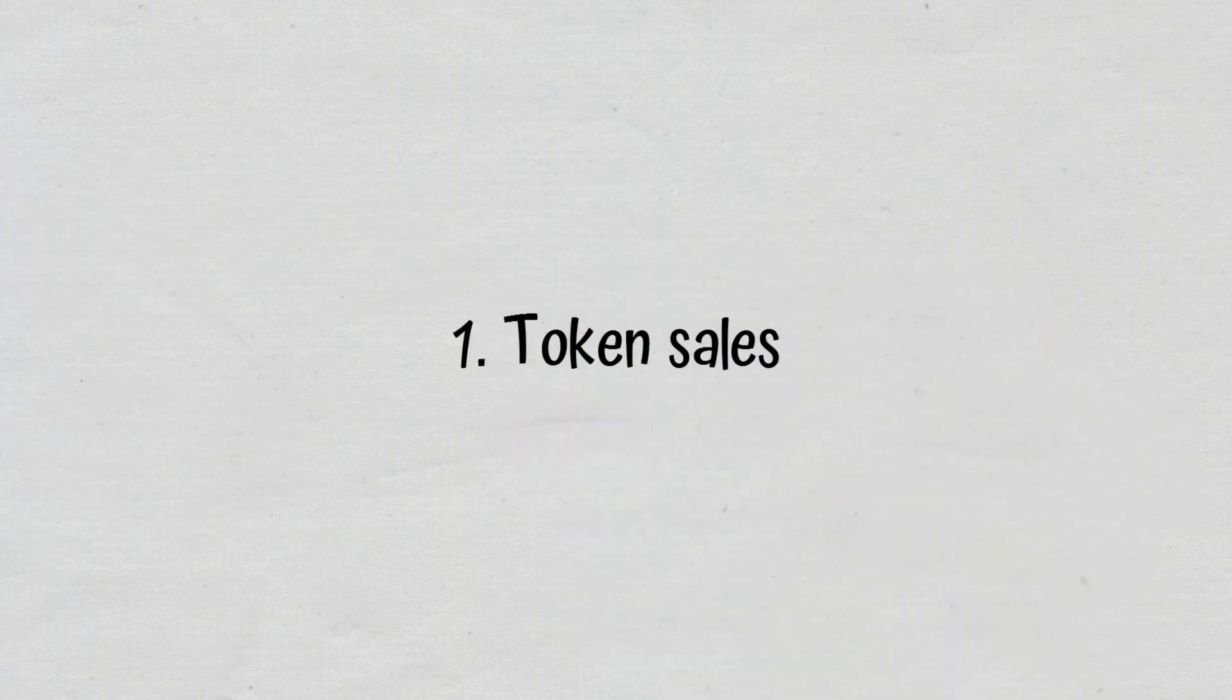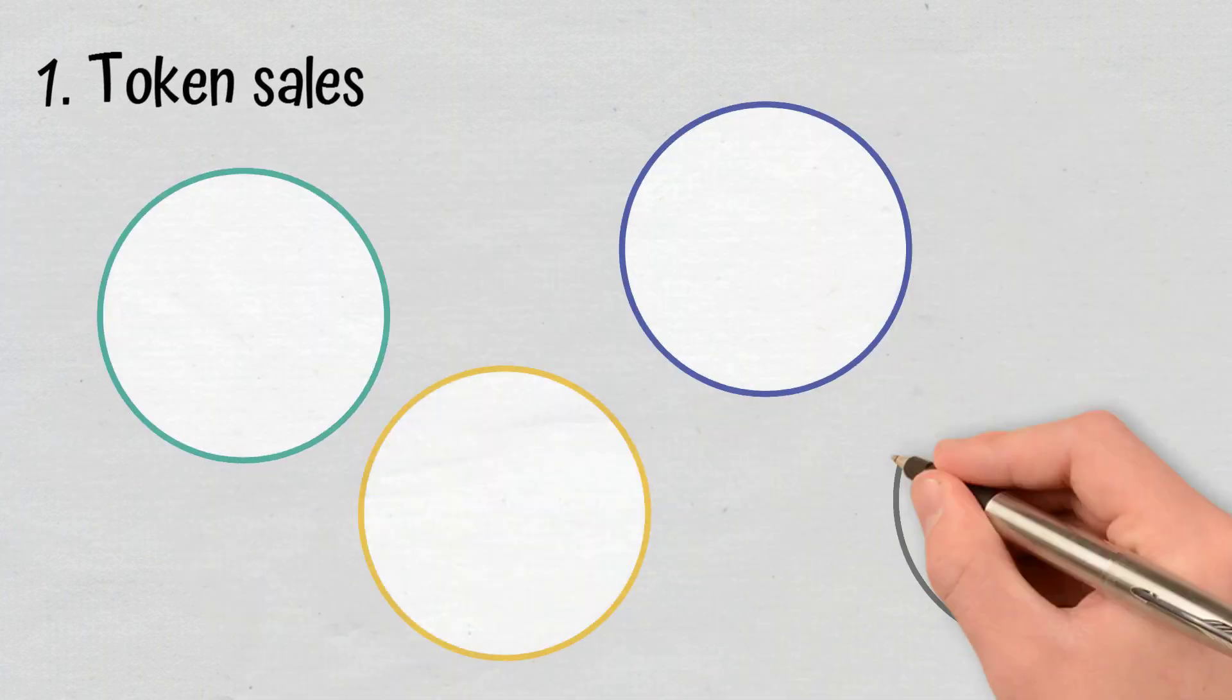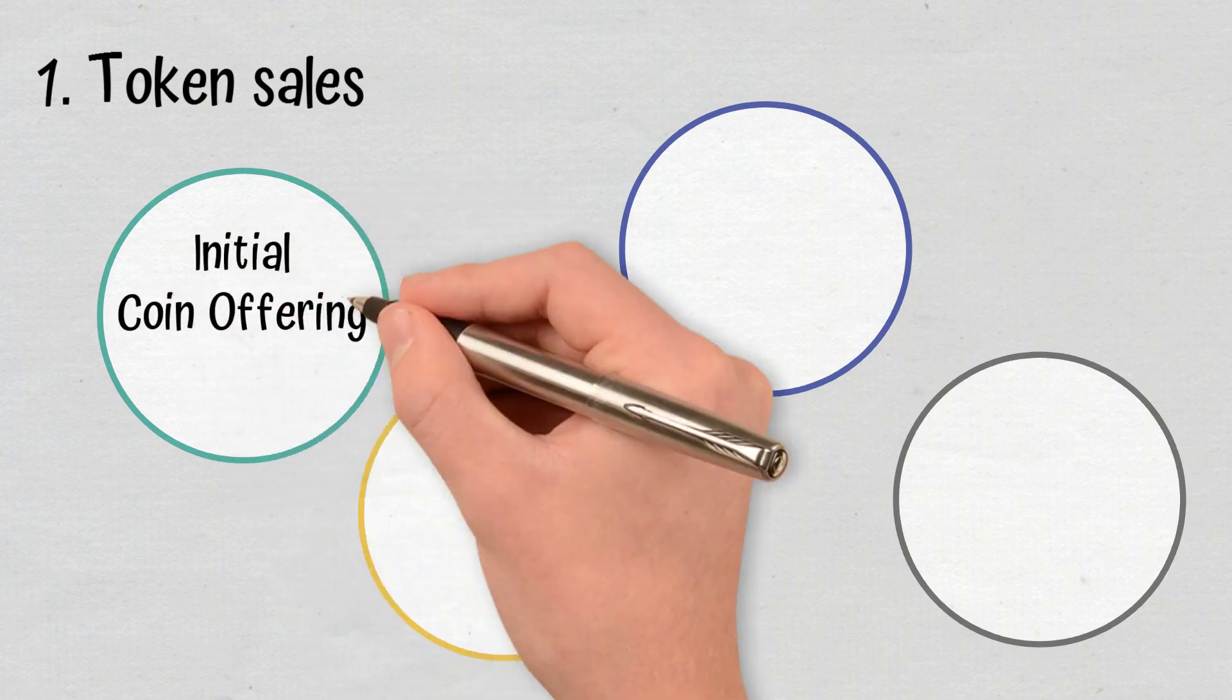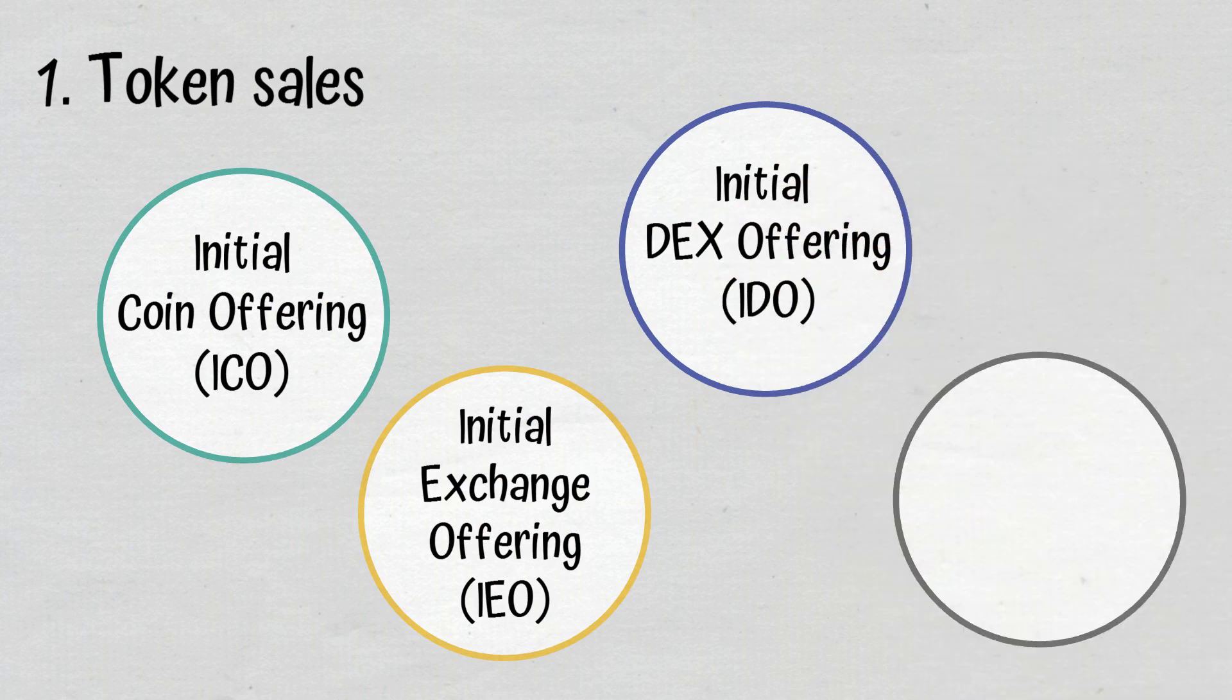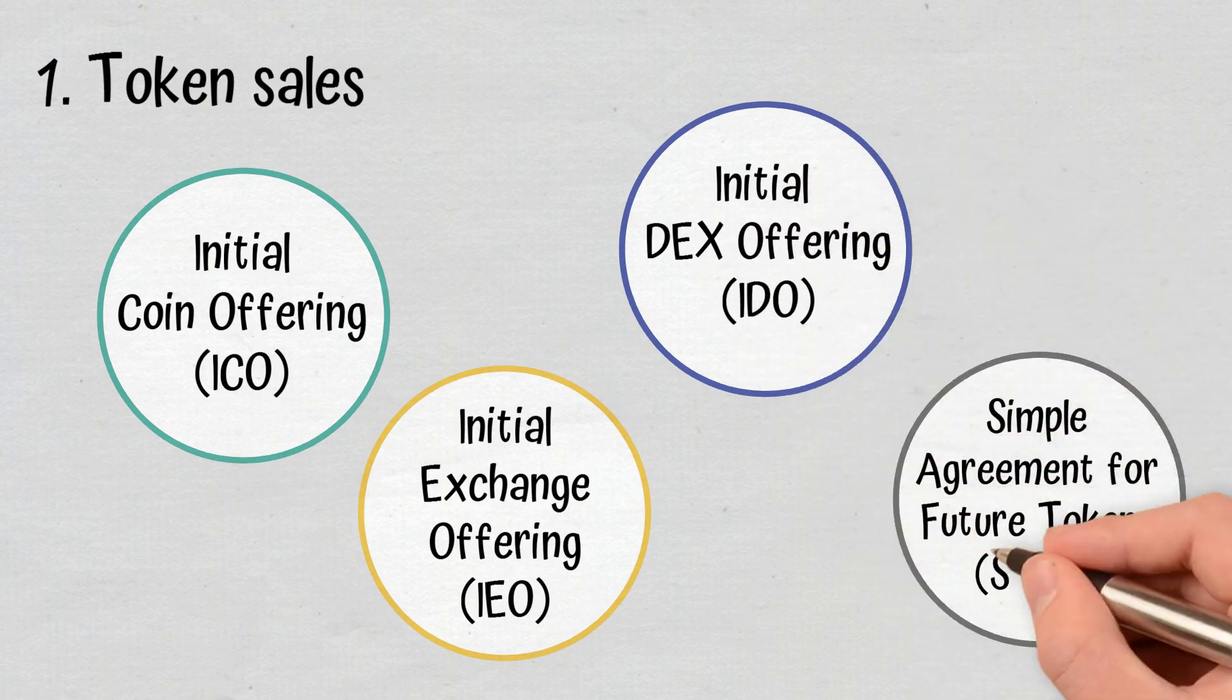Token sales. The most notable types of token sales are initial coin offering, initial exchange offering, initial DEX offering, and simple agreement for future tokens.